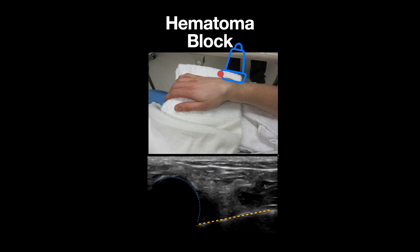To perform the procedure, you can first identify the hematoma with ultrasound, then mark the skin, and note the depth and trajectory to reach the hematoma. You can then set down the ultrasound probe and attempt your hematoma block.